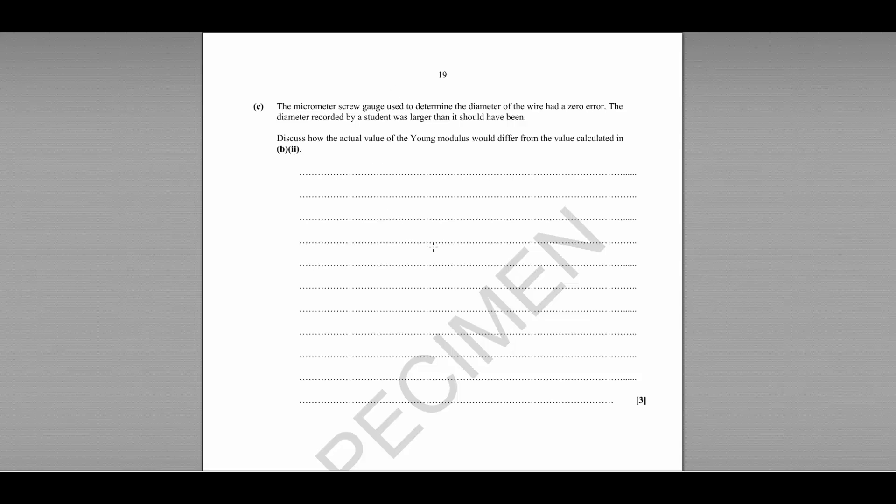So discuss how the actual value of the Young modulus would differ from the value calculated in BII. Well, if the actual diameter is smaller, then A would be smaller, the cross-sectional area. That's because the cross-sectional area is equal to pi D squared divided by 4. So if D's got smaller, A will have to get smaller as well.